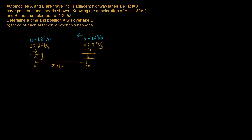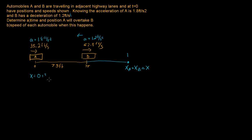To find the position where car A reaches car B, we set their positions equal. Writing the kinematic equation for car A: X_A equals an initial distance of zero, plus its initial velocity of 35.2 times time T, plus one half times its acceleration of 1.8 feet per second squared times T squared.